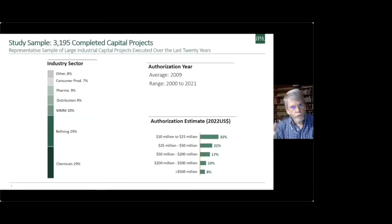So the sample I collected for this particular analysis is a sample spanning 20 years. Projects were authorized from the year 2000 until just recently, just a year ago, 2021. The average year of authorization in this particular group of projects is 2009. And in total, I have about 3,200 completed capital projects in this sample.